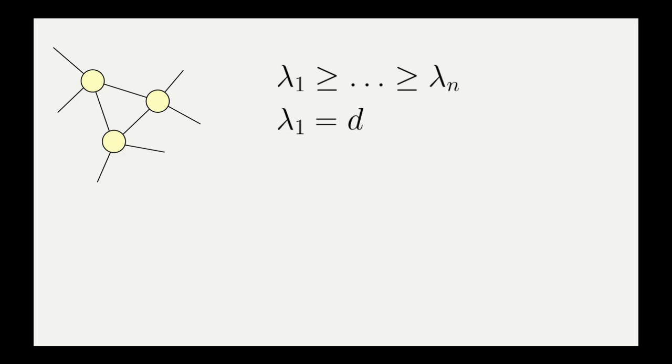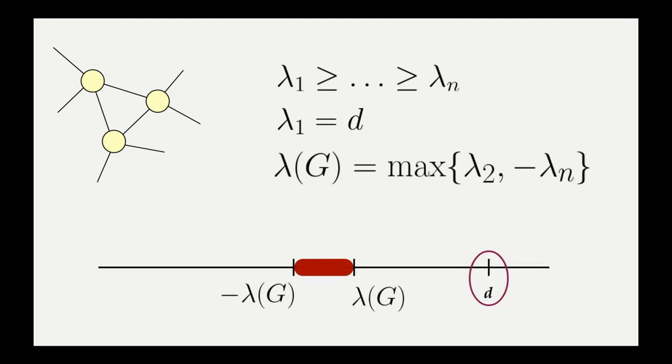For d-regular graphs, we also know that the largest eigenvalue λ₁, known as the trivial eigenvalue, is equal to d. The extent to which d-regular graphs are expanding is governed by the magnitude of their non-trivial eigenvalues. So we can define spectral expansion by the maximum between the second largest and the negative of the smallest eigenvalue.